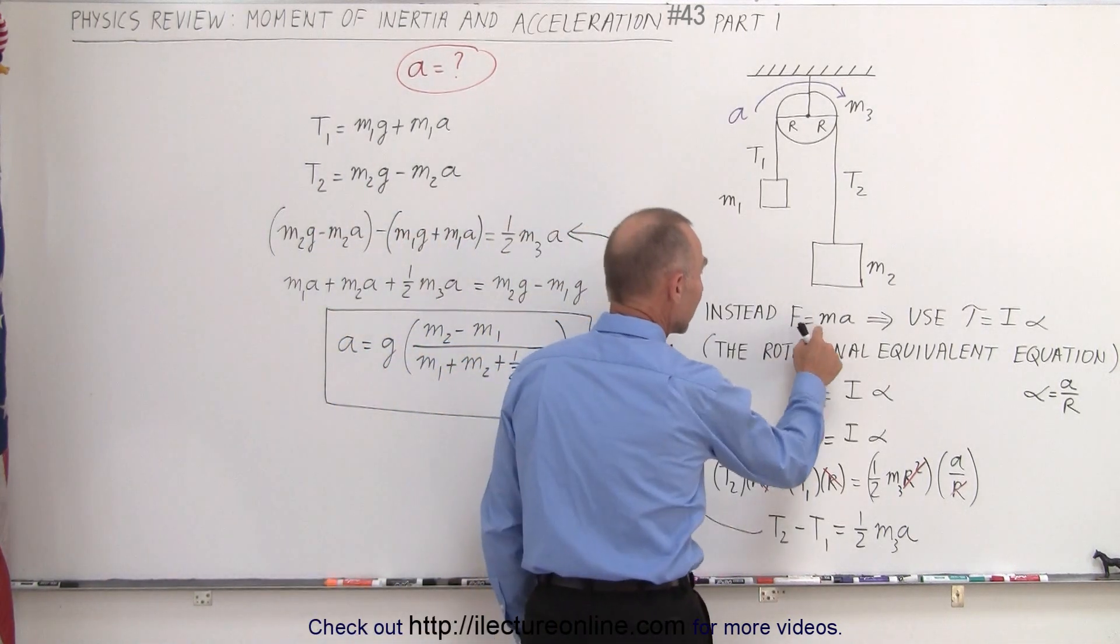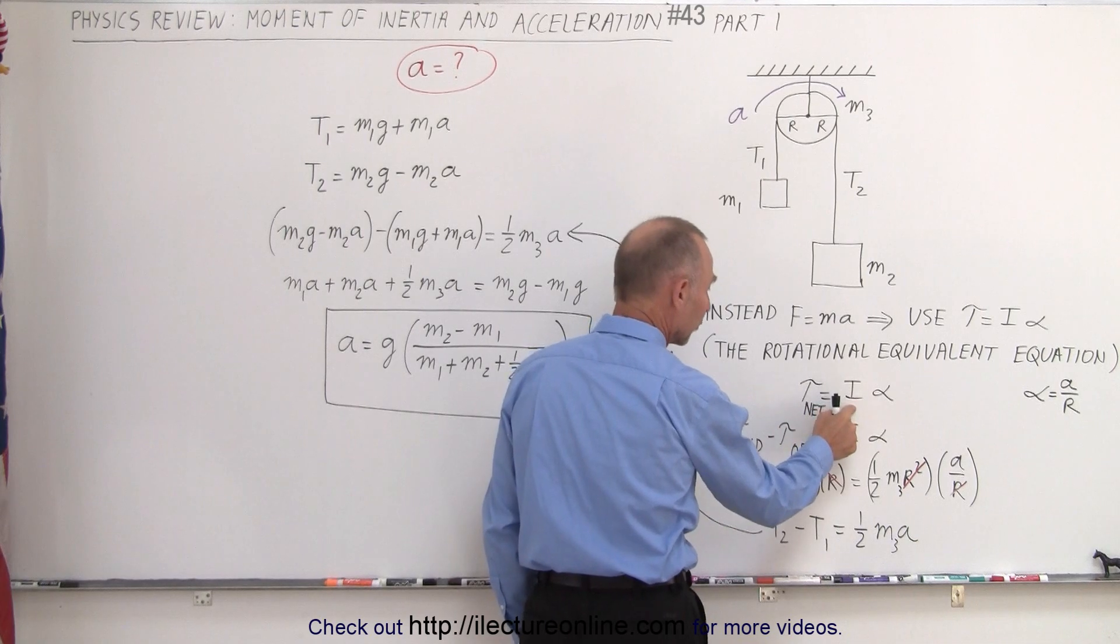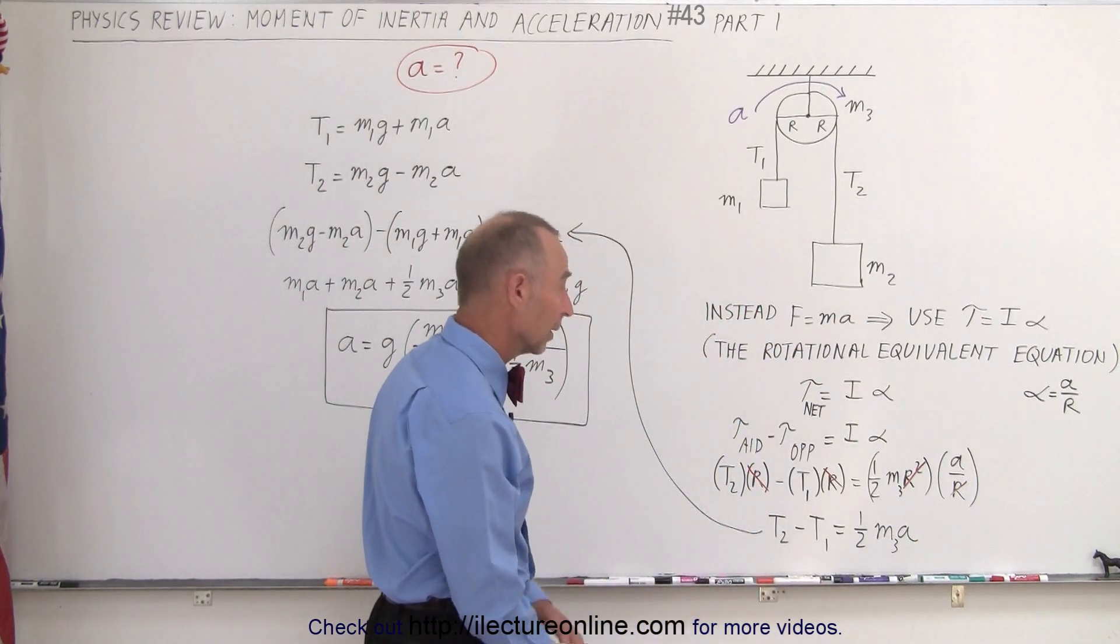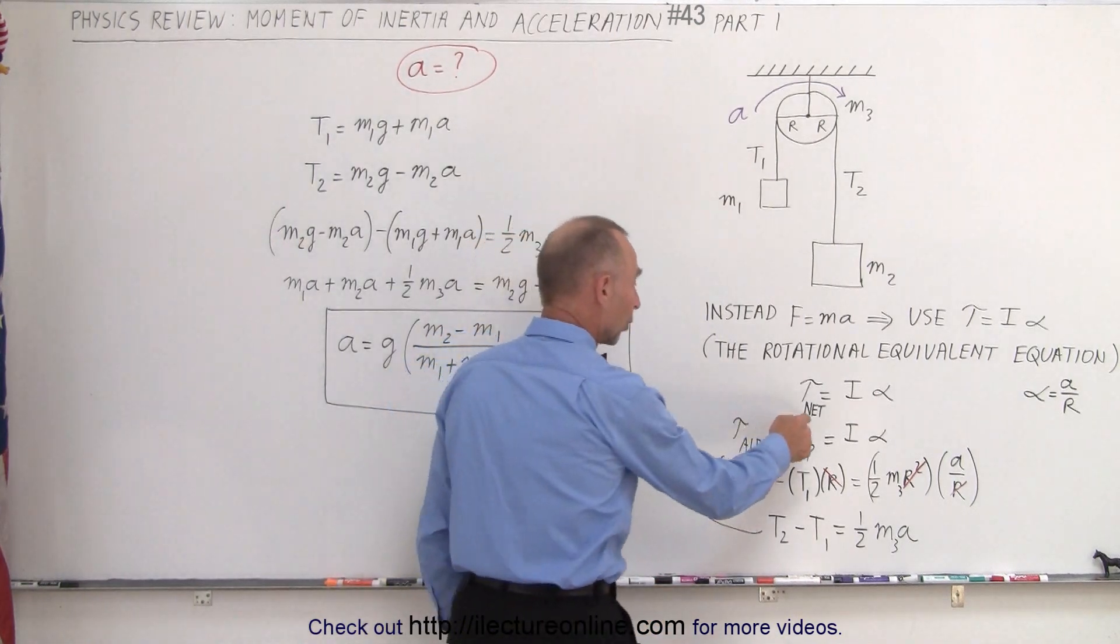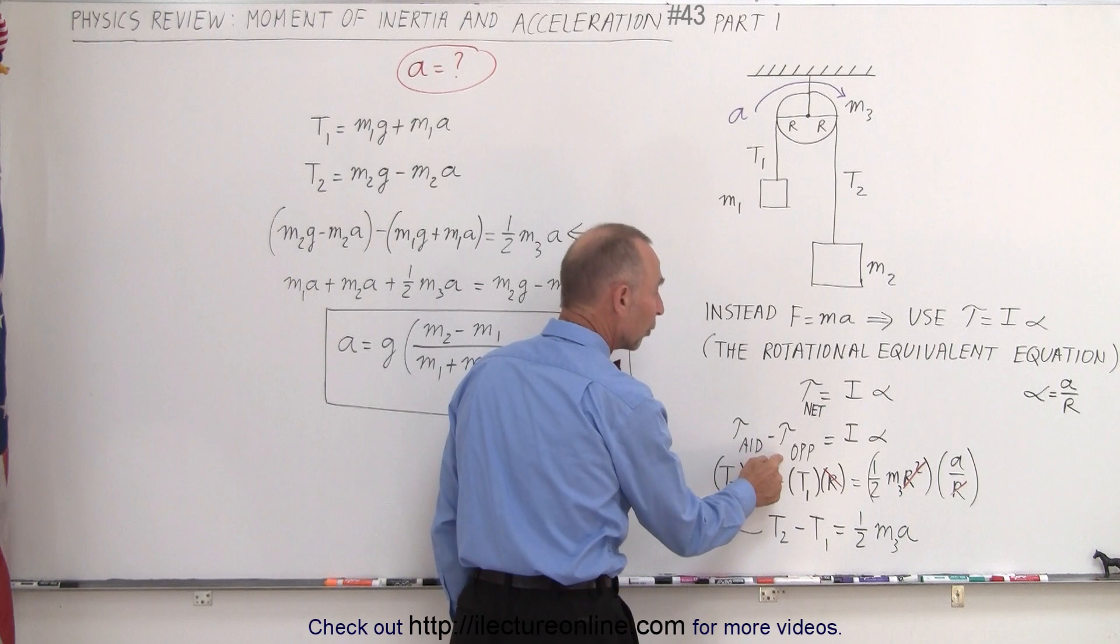So instead of using F net equals mass times acceleration, we use torque net equals the moment of inertia of the pulley times the angular acceleration. Just as before, the net torque will be all the torques aiding the acceleration minus all the torques opposing acceleration.